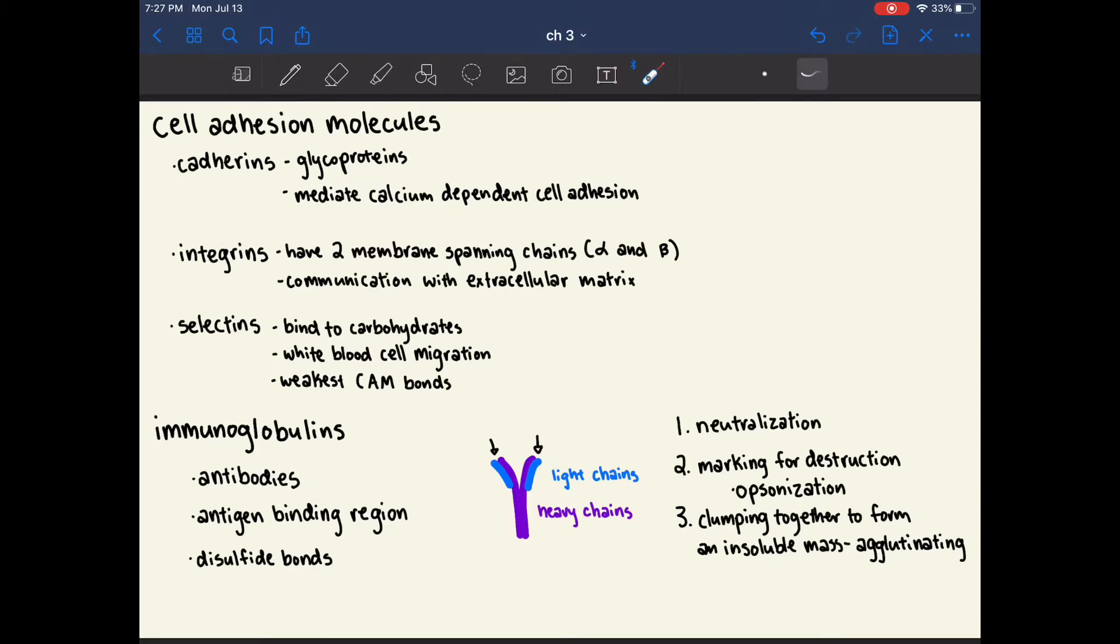Selectins bind to carbohydrates on other cells. This is really important for white blood cell migration because white blood cells have unique carbohydrates on their surface. Selectins form the weakest cell adhesion molecule bonds of the three classes that we talked about.